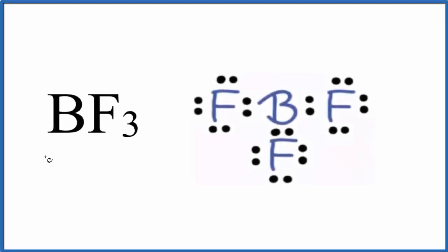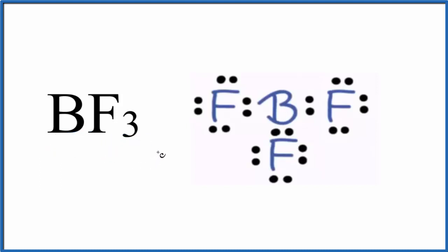Let's look at the bond angles for BF3, boron trifluoride. To really understand the bond angles, we need a valid Lewis structure. This is the Lewis structure for BF3. If you need help drawing this, there's a link at the end of this video on how to draw the Lewis structure for BF3.